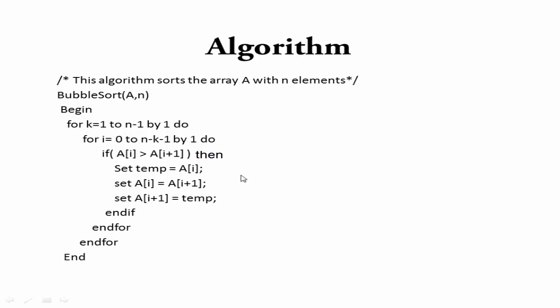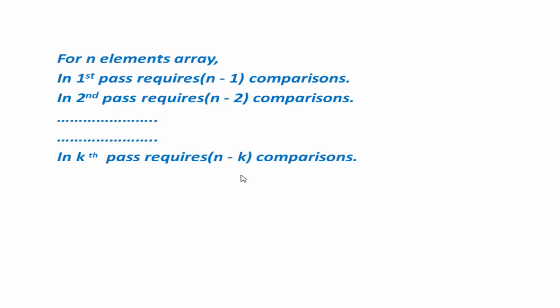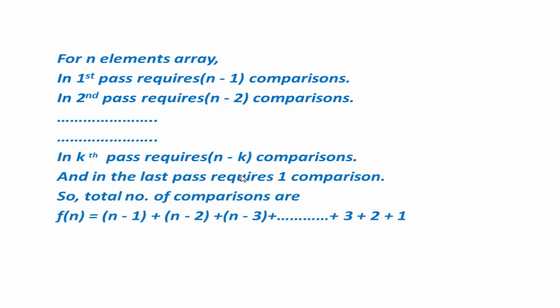Next, we calculate the complexity of this algorithm. The time for a sorting algorithm is measured in terms of number of comparisons. For an n-element array, in the first pass we require n minus 1 comparisons, in the second pass n minus 2, and in the kth pass n minus k, down to 1 comparison in the last pass. The total number of comparisons f(n) equals (n-1) + (n-2) + ... + 1, which equals n(n-1)/2, giving us O(n²) time complexity.